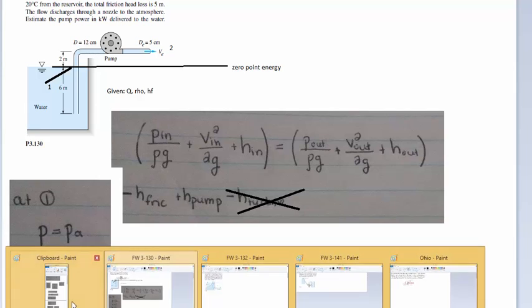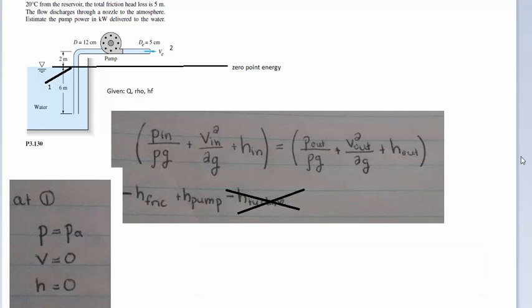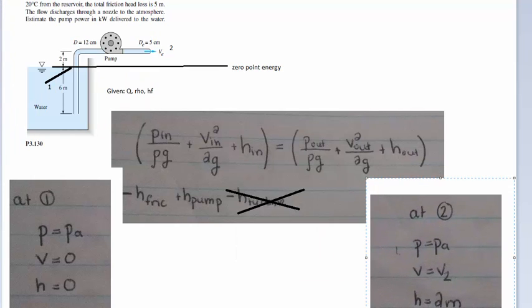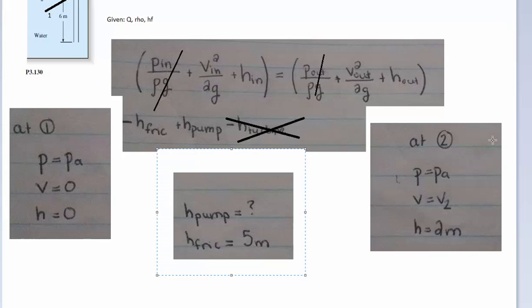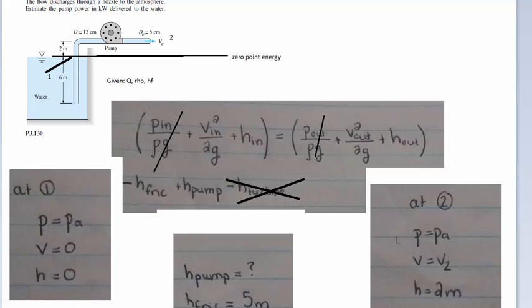Next we need to do the same thing for our second point. At point two, we are again at atmospheric pressure because it's exposed to the air, so those pressure terms cancel out. Our velocity we don't know yet, and our height is going to be two meters. We should add that we have a head loss term due to the pump and due to friction. We're told the head loss due to friction is five meters, and we're looking for the head loss due to the pump.